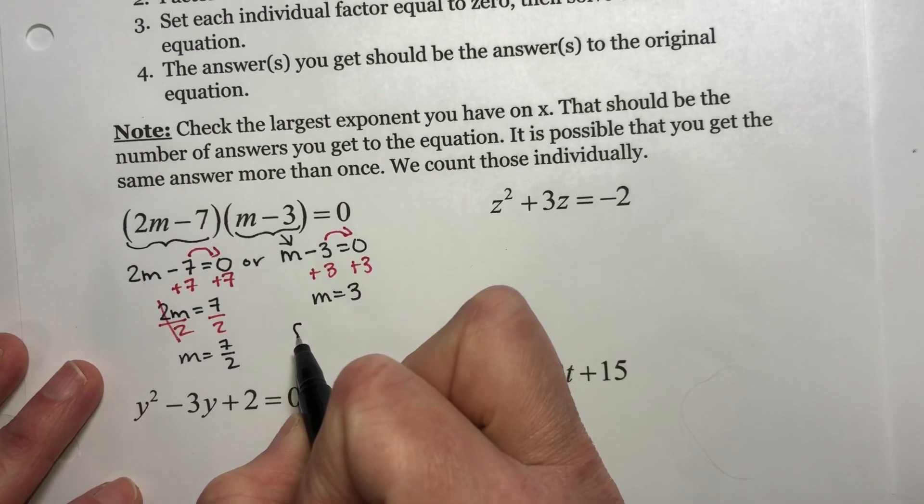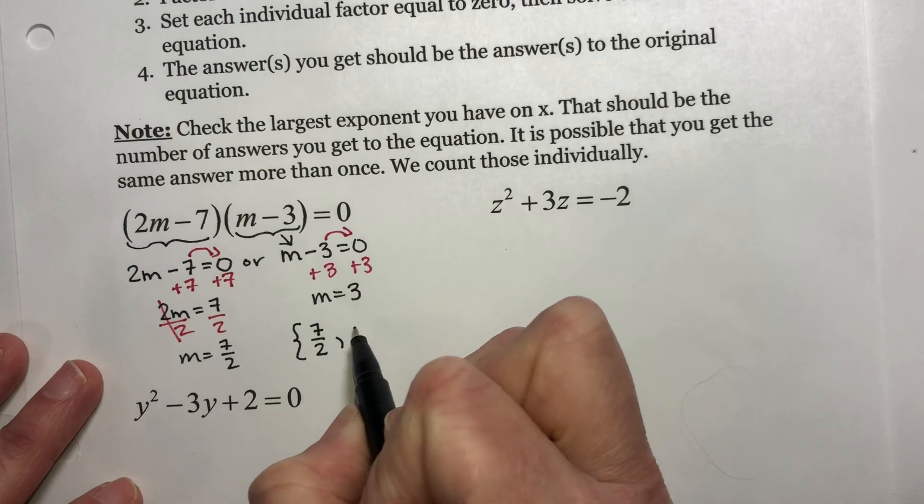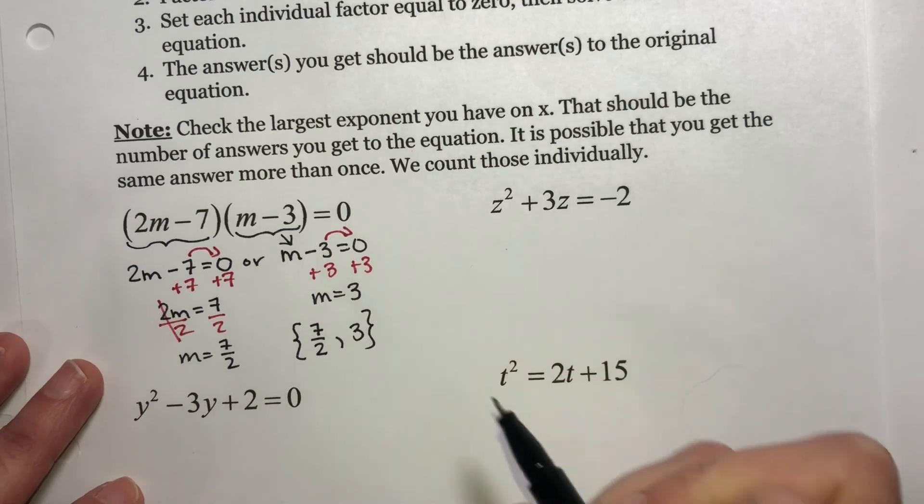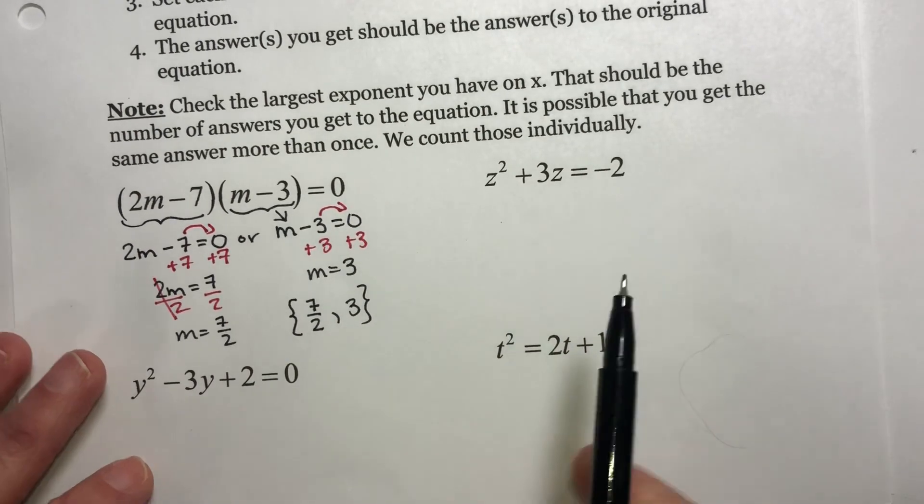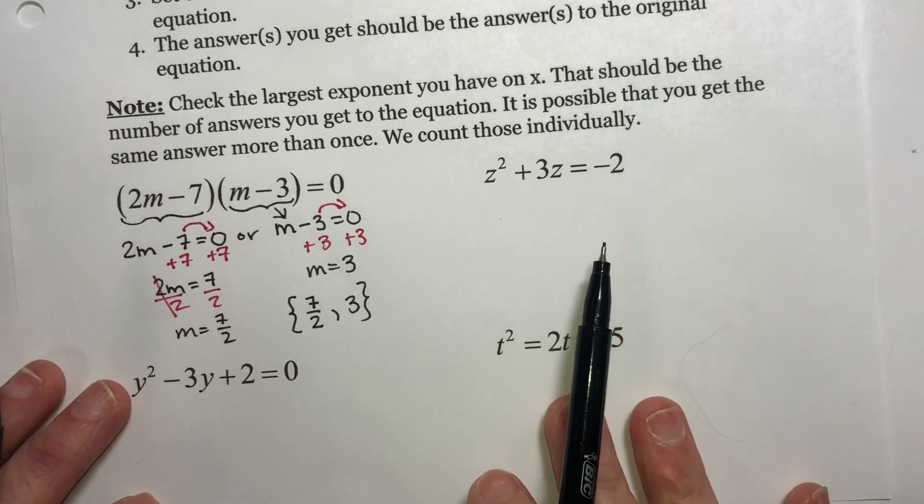When we get more than one answer, you should write your answer in set notation. You just take each answer and put it in the little squiggly braces. They don't have to be pretty, but they should be there.